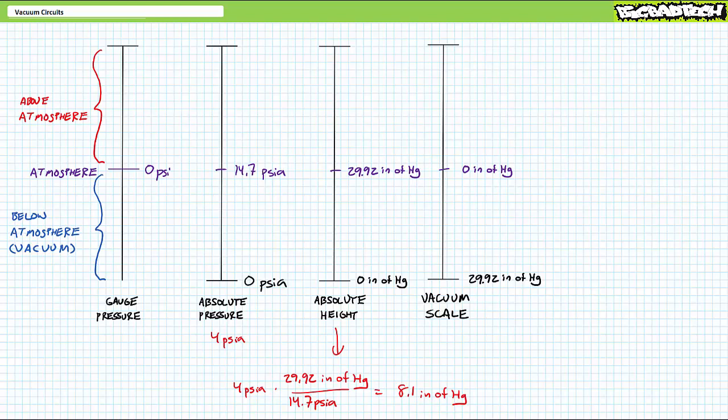The unit we want inches of mercury is on top. The unit we don't want PSI absolute is on the bottom. Units we don't want cancels out. We're left with roughly 8.1 inches of mercury expressed using the absolute height scale.